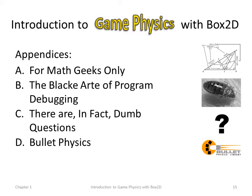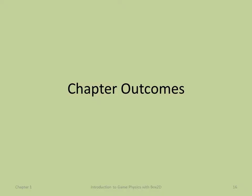Finishing with some appendices: Appendix A is for math geeks only — it drills into mathematical details from chapter two. Appendix B talks about the black art of program debugging, because a lot of books don't cover much about debugging. Appendix C talks about intelligent questions and dumb questions — despite what you may have been told, there are in fact dumb questions. Appendix D briefly dips into bullet physics. Box2D is essentially a cut-down version of bullet physics, an open-source 3D physics engine. Once you've mastered Box2D, bullet physics isn't too much harder.